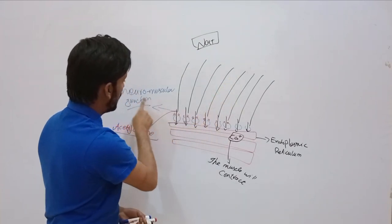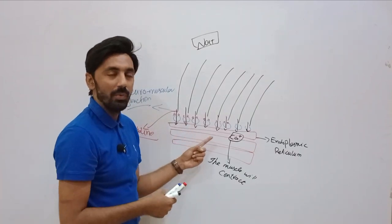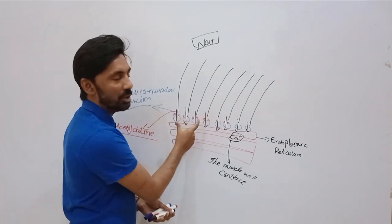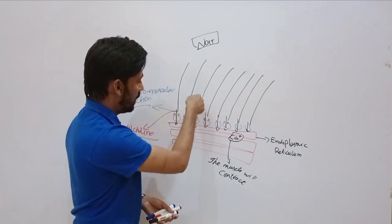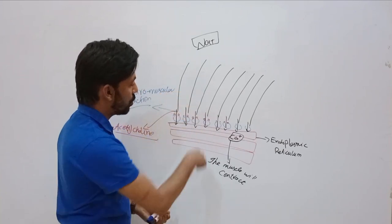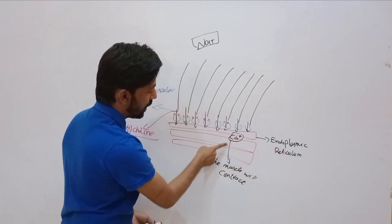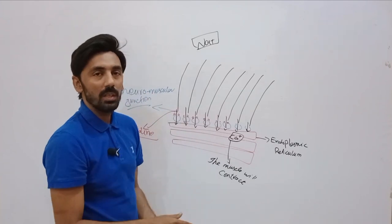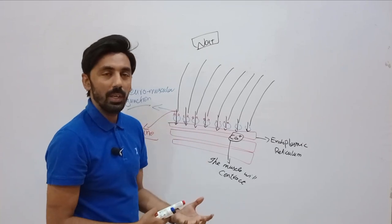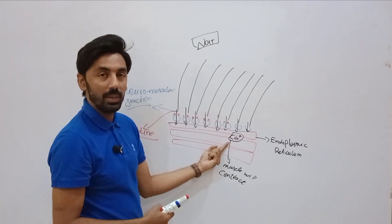The action potential comes via motor neurons to the neuromuscular junction, where a neurotransmitter — acetylcholine — is released. Acetylcholine opens the sodium-potassium channels, allowing sodium influx. This causes the endoplasmic reticulum inside the cells to release calcium ions, and when calcium ions are released, the muscle contracts. So acetylcholine is very helpful in muscle contraction, and calcium ions are essential for it.